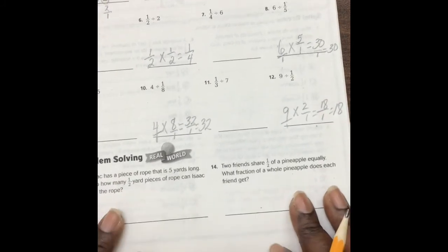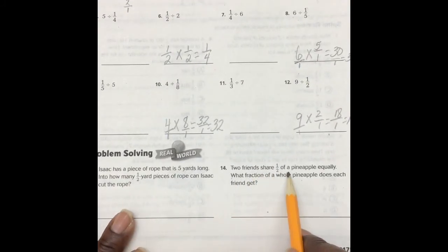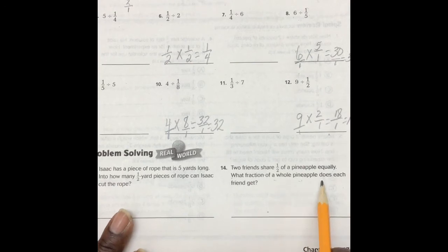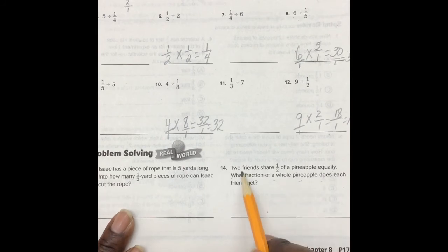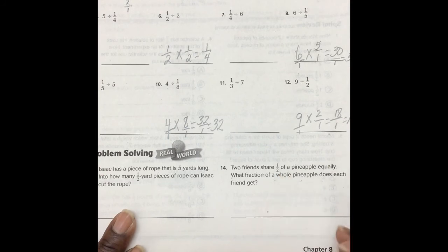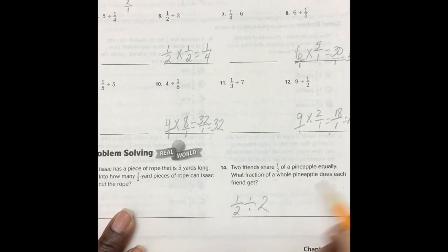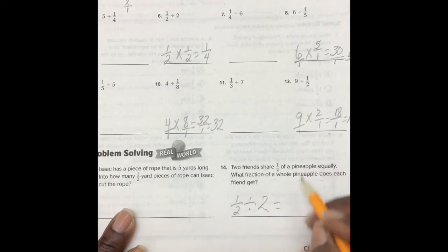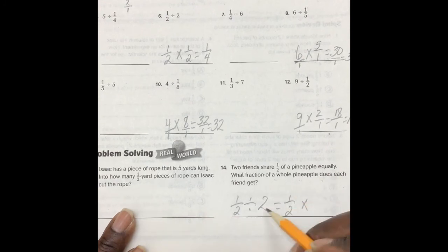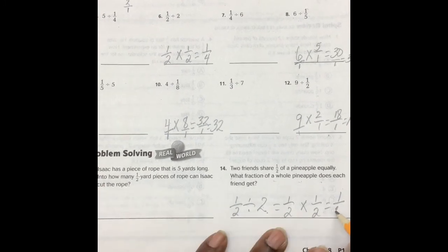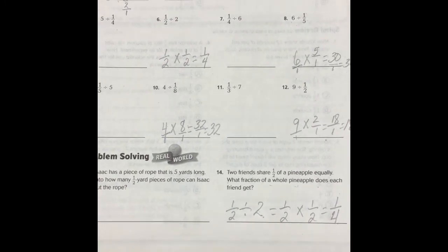Let's look at number 14. 2 friends share 1 half of a pineapple equally. What fraction of the whole pineapple does each friend get? So, what is being divided? The friend or the pineapple? The pineapple is. So, we take 1 half of the pineapple and we divide it into 2 friends. And therefore, we want to change this. So, 1 half times, instead of 2, it would be 1 over 2, which gives us 1 fourth. So, that's the fractional part of the whole pineapple that each friend gets.